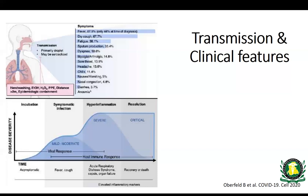Symptoms have a spectrum from mild to critical disease. Most people will have a fever — 88% have fever. The other common symptom is dry cough and fatigue; this is mostly not a purulent cough, it's mostly a dry cough. Then usually a few days into the illness, if somebody is developing SARS or more severe disease, they will complain of shortness of breath or dyspnea.